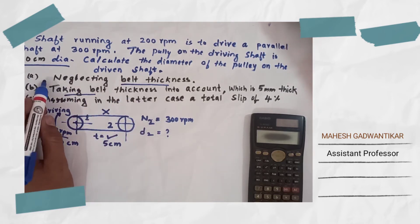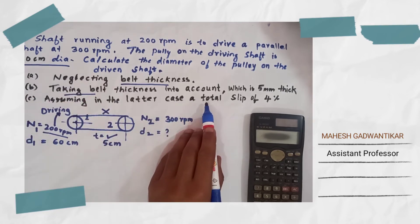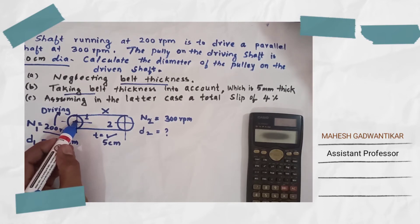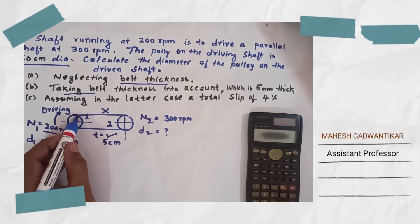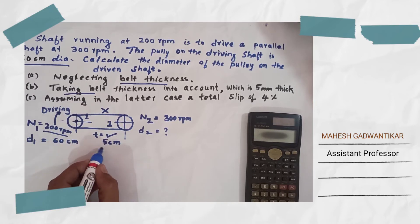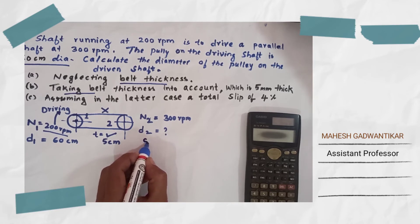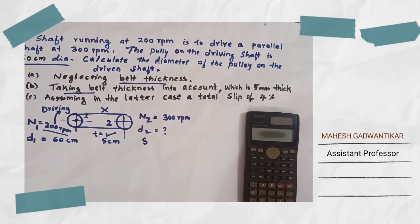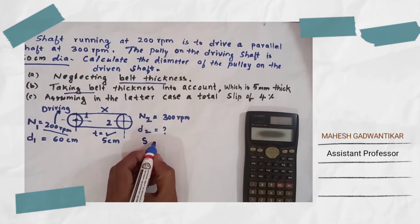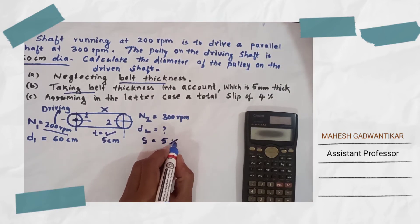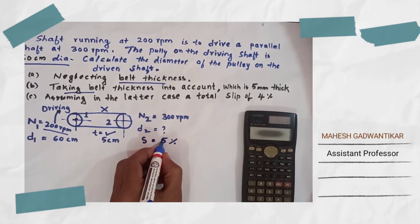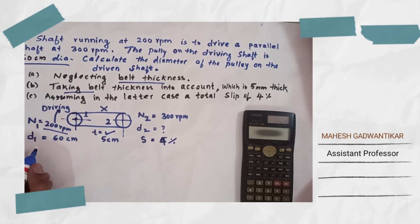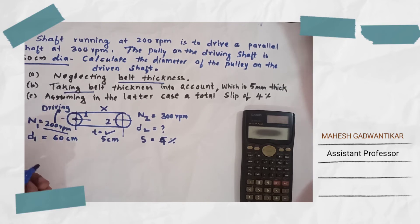In the third case, a total slip of 4 percent is given. This means while transferring power from one shaft to another, the slip between the pulley and belt is 4 percent. Slip is denoted by S, and that is 4 percent. Now we go for calculating the diameter of the driven shaft by neglecting the thickness.